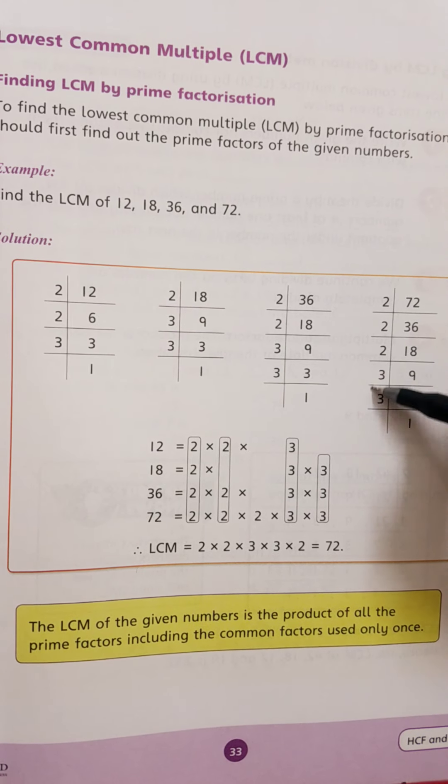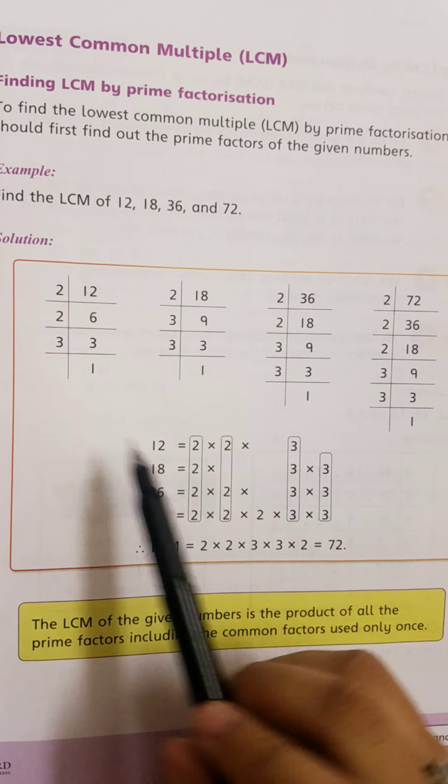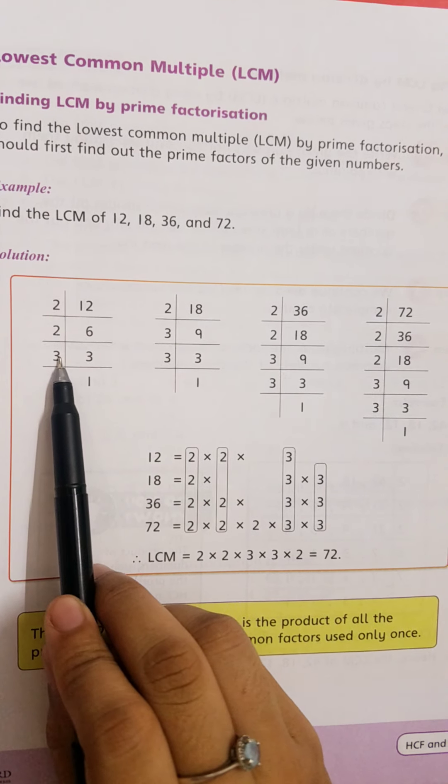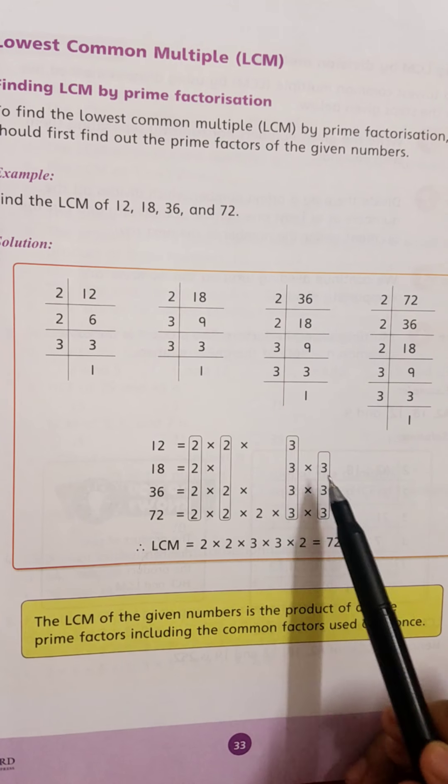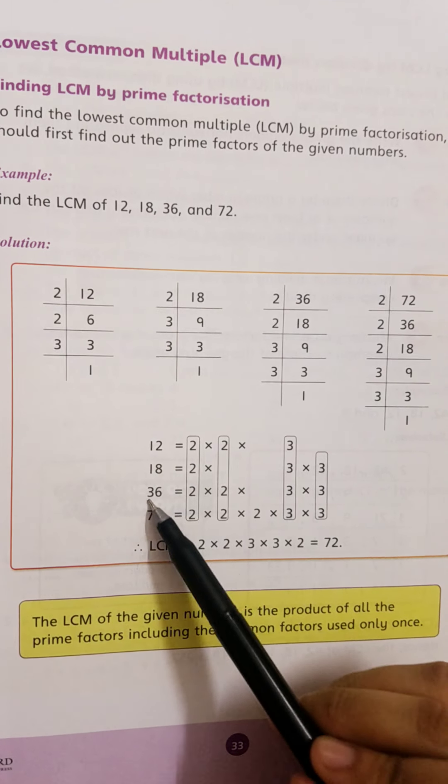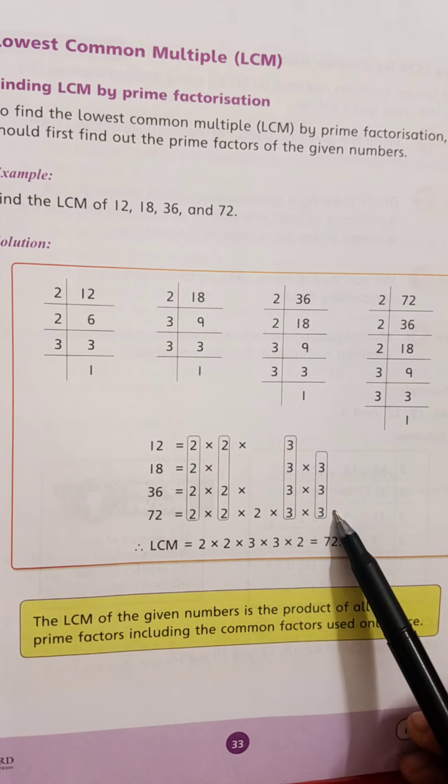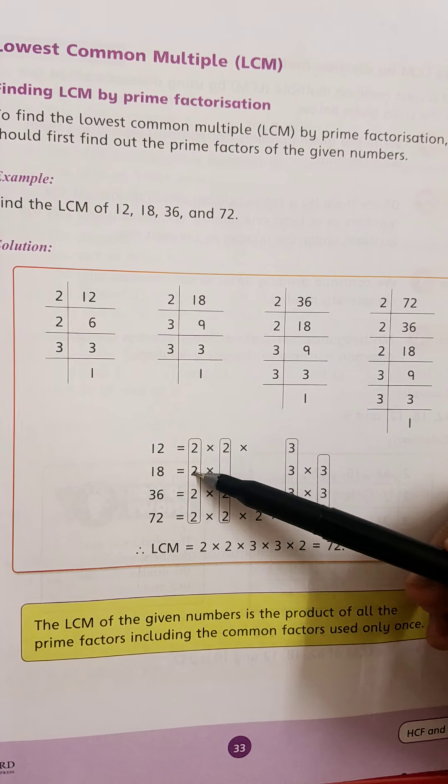Now write the prime factors separately. First, 12's factors are 2 times 2 times 3. 18's factors are 2 times 3 times 3. Similarly, write 36's factors and 72's factors. From these we need to find the common factors.